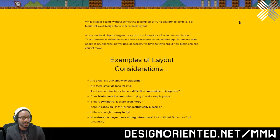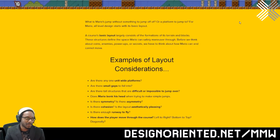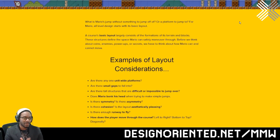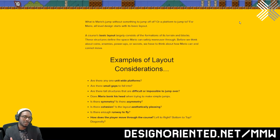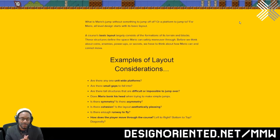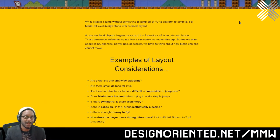What is Mario's jump without something to jump off of, or a platform to jump to? For Mario, all level design starts with basic layout. This basic layout largely consists of formations, terrain, blocks, and all those basic chunky structures. These structures define the space that Mario can safely maneuver through. So before we think about coins, enemies, power-ups, and secrets, we really need to figure out where Mario's going to be and what the space looks like.